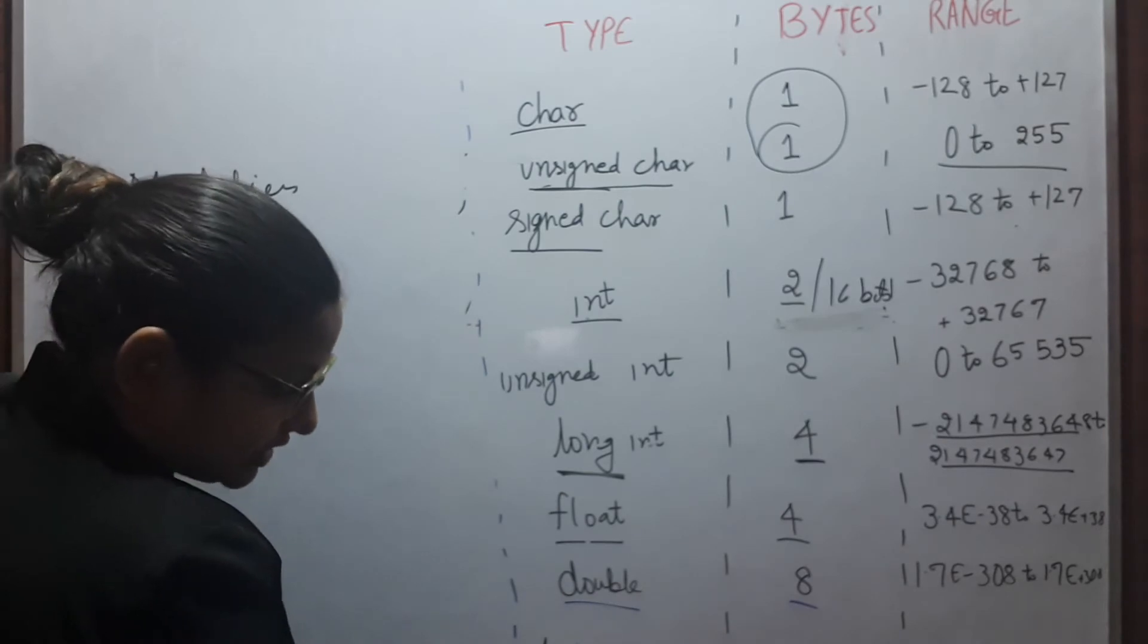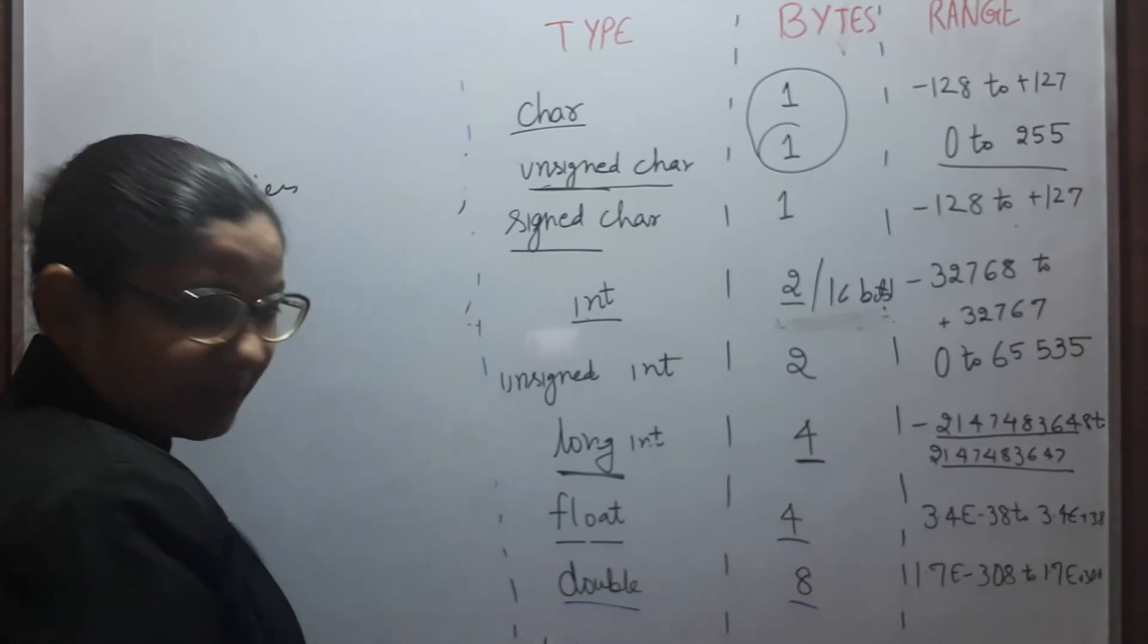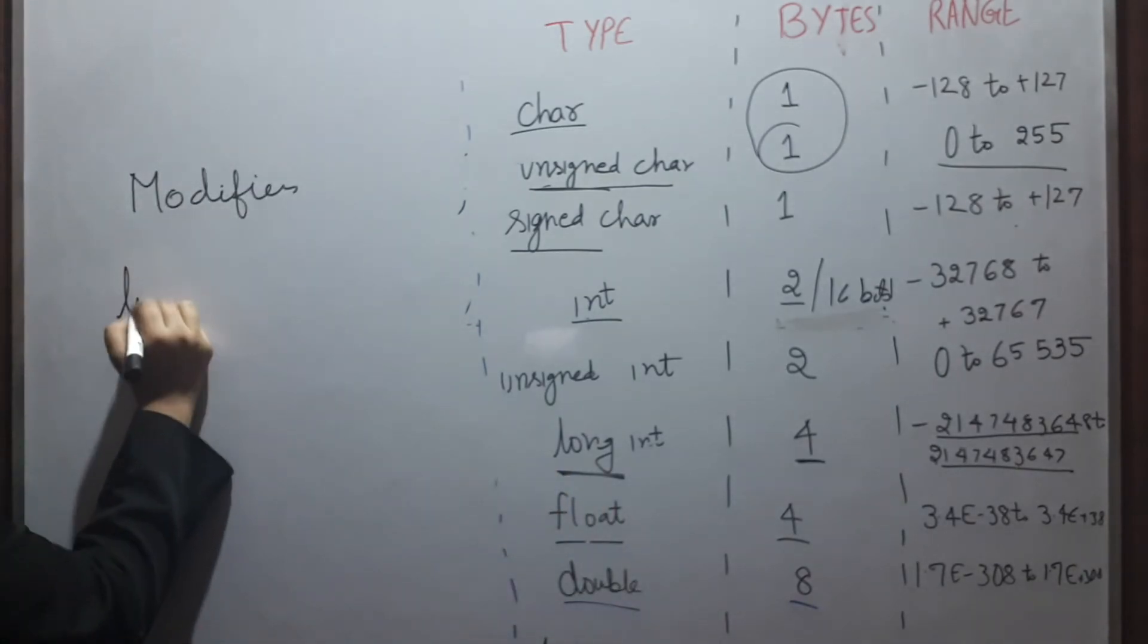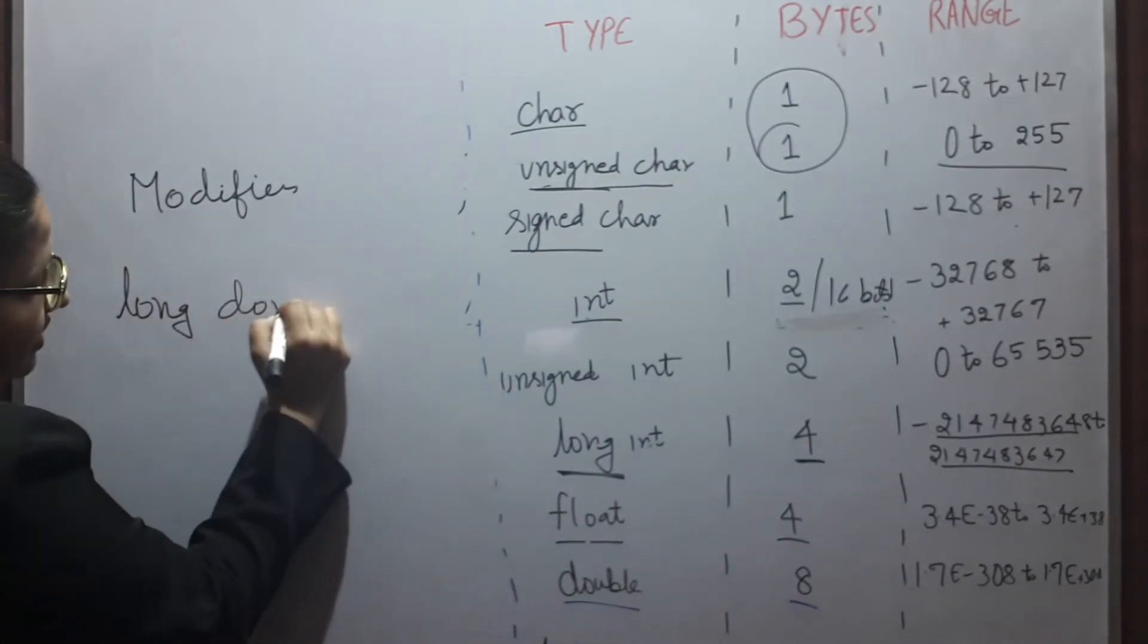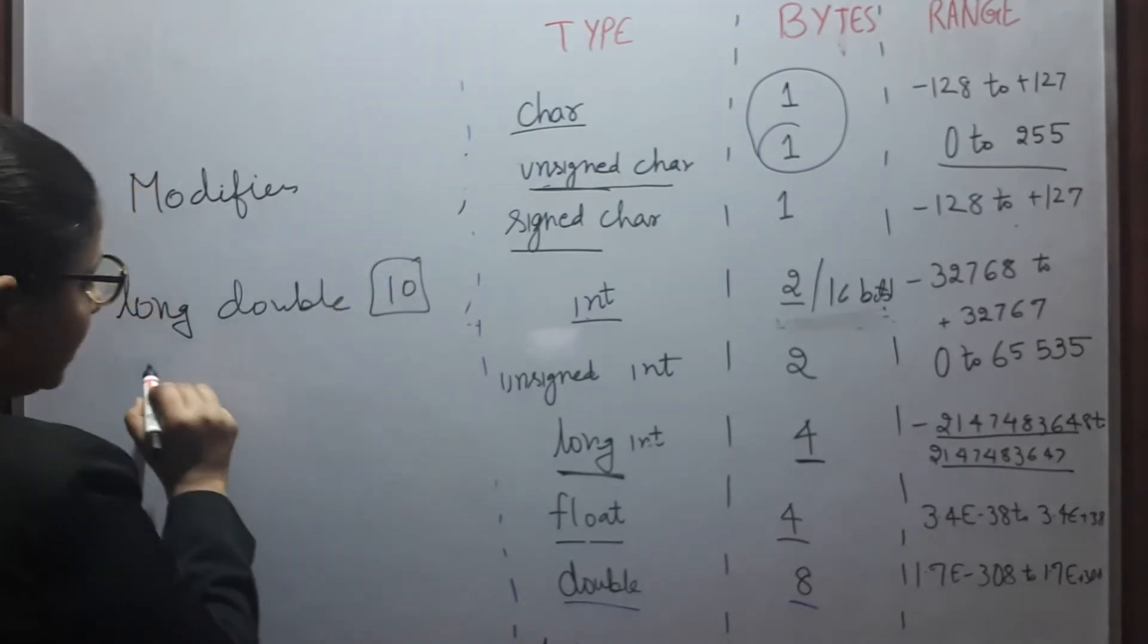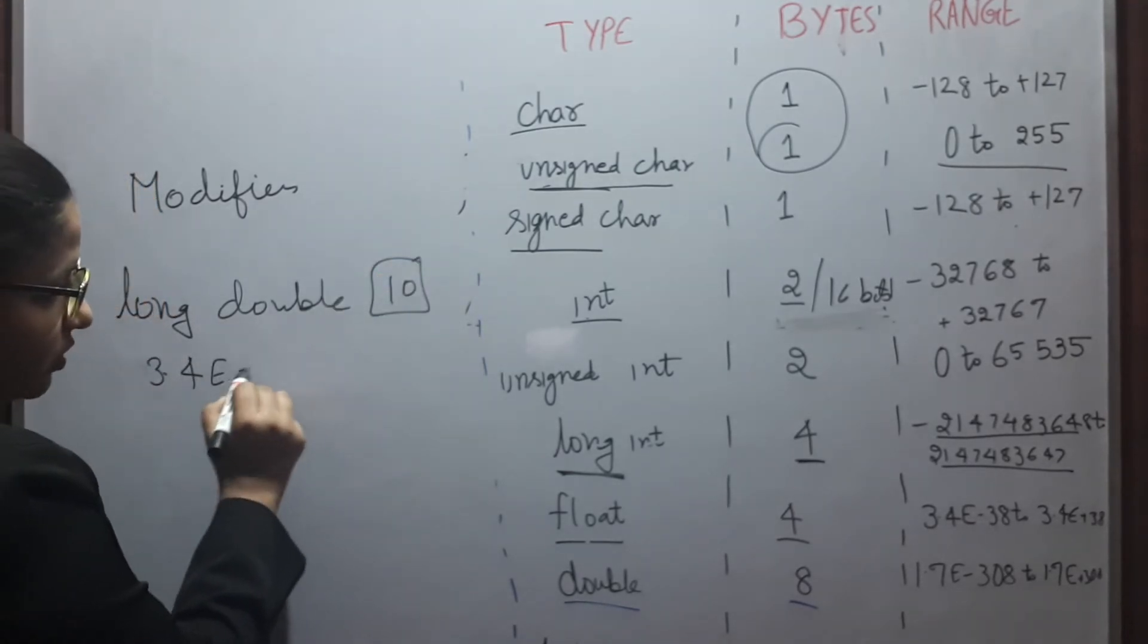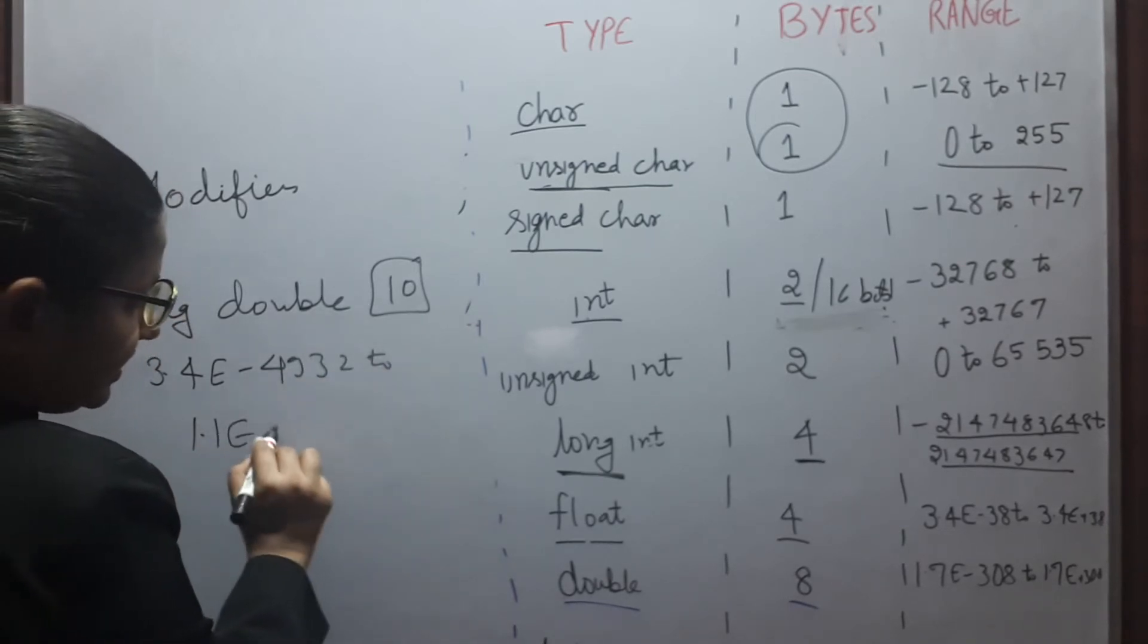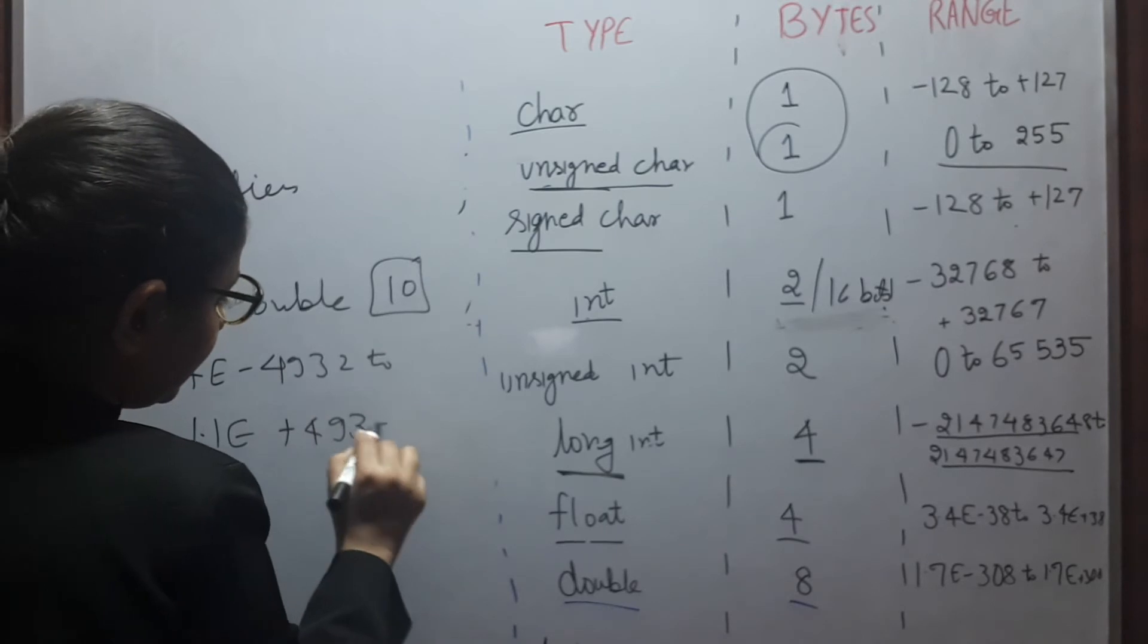We can have double, long with double as well. And we can have long double as well. Now the range, sorry, memory is 10 bytes. And the range is 3.4E-4932 to 1.1E+4932.